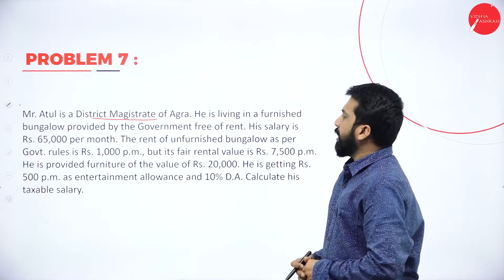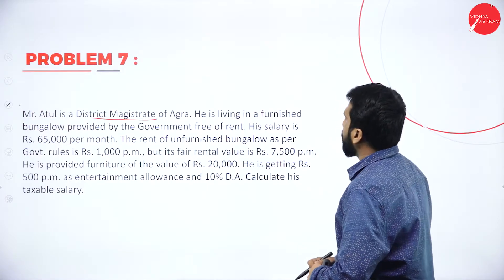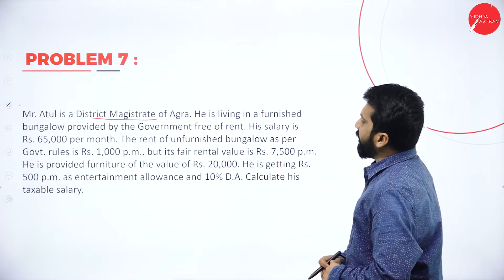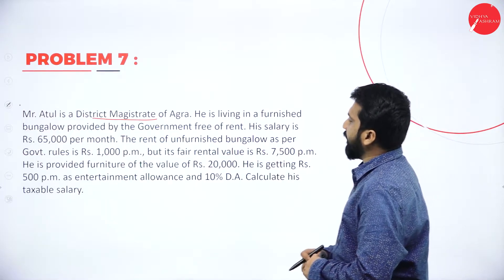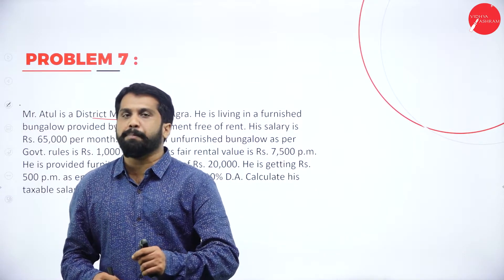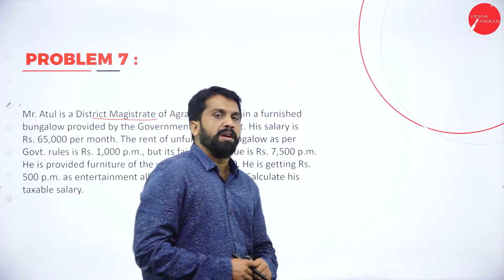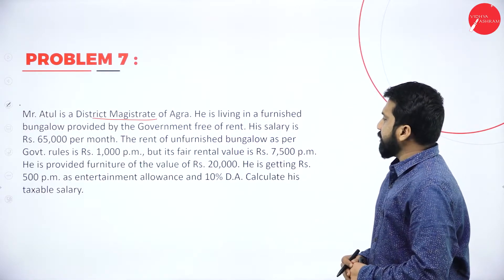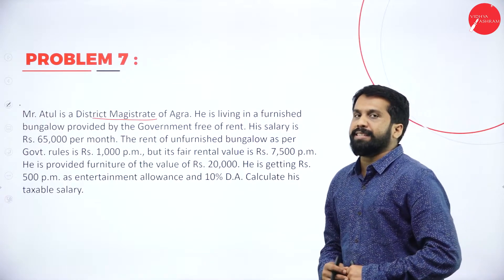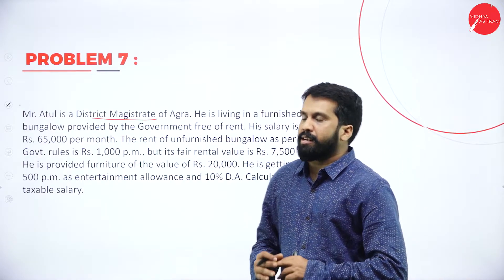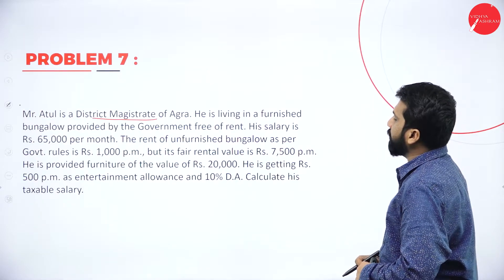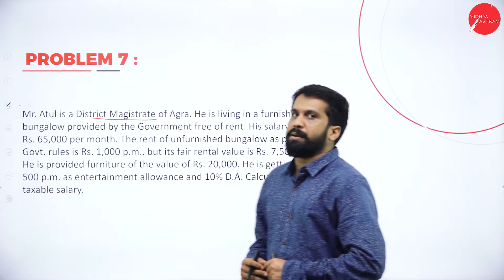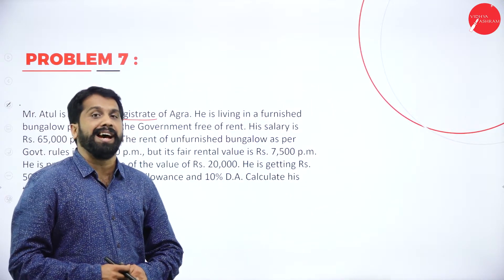He is not living in an unfurnished house — he is living in a furnished house. Its fair rental value is 7,500 per month. He is provided furniture of rupees 20,000. As I told you, any furniture or assets given to employee by employer, we have to consider 10% cost of that particular asset. He is getting rupees 500 per month as entertainment allowance. Remember, he is a government employee.